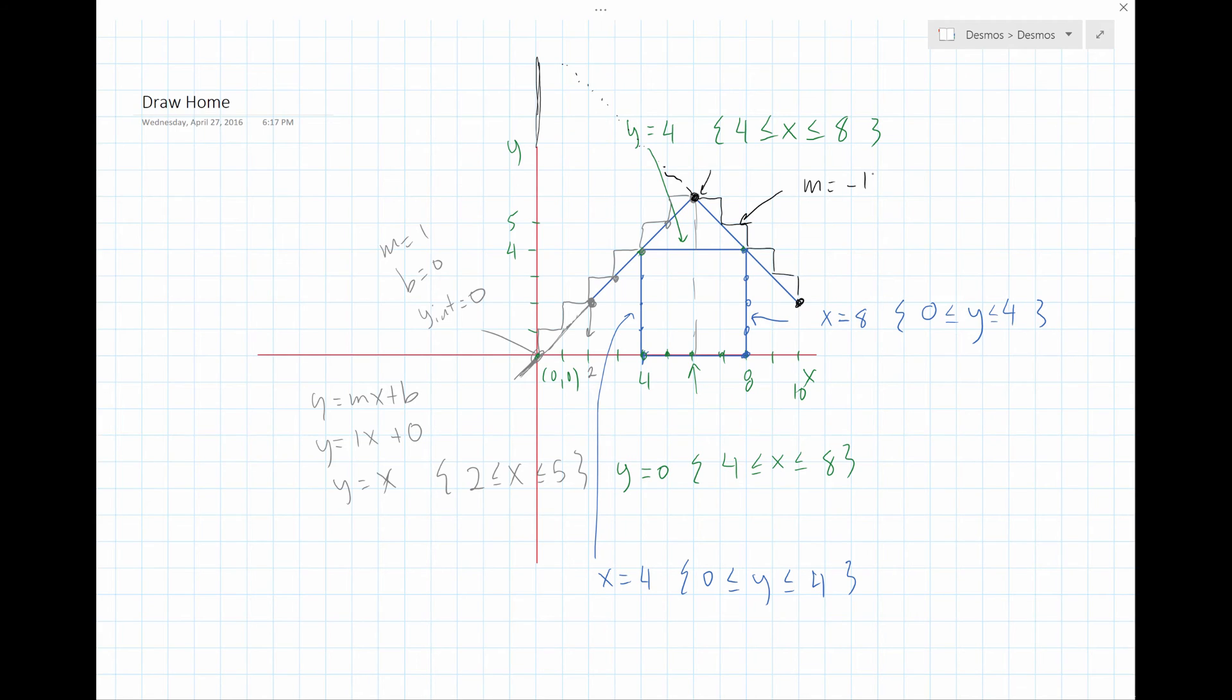But the cool thing is, we can use Y is equal to MX plus B, right? As long as I have a point and a slope, I can find B. So do I have a point? I have this point right here, right? This point. So let's see, that's going to be what? 1, 2, 3, 4, 5, 6. That looks like it's 6. 1, 2, 3, 4, 5, 6. 1, 2, 3, 4, 5, 6. It looks like it's 6, 6. Okay. So that's my point, right? This one's X, this one's Y. So Y is 6 is equal to the slope of negative 1 times 6 plus what? B. So 6 is equal to negative 6 plus B, right? And add 6 and add 6. That's going to be 12 is equal to B.